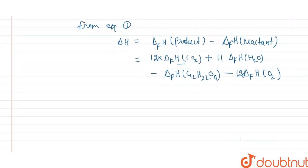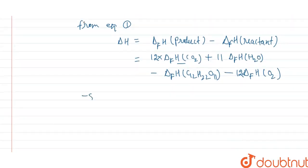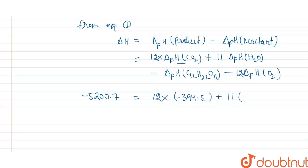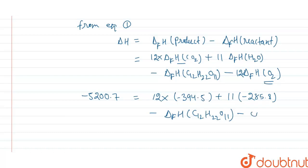Now putting in all the values: the enthalpy of combustion is minus 5200.7 kJ/mol, equal to 12 times enthalpy of formation of CO2 which is minus 394.5 kJ/mol, plus 11 times enthalpy of formation of water which is minus 285.8 kJ/mol, minus enthalpy of formation of sucrose C12H22O11, minus enthalpy of formation of O2. Since O2 is in its elemental and standard natural state, its enthalpy of formation equals zero.